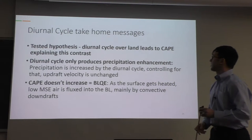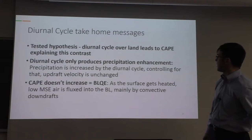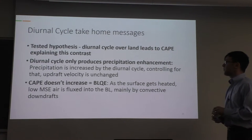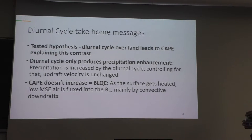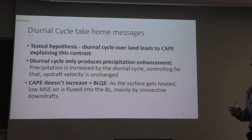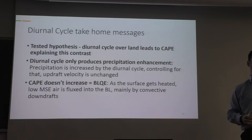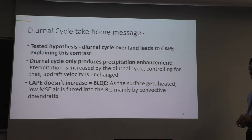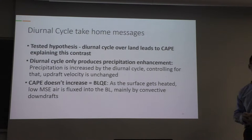Diurnal cycle take-home messages: our tested hypothesis is that the diurnal cycle over land leads to CAPE explaining the land-ocean contrast in convective intensity. We find that the diurnal cycle only produces precipitation enhancement — the amount of rainfall over our island increases with the diurnal cycle — but actual convective intensities are unchanged when you control for the amount of precipitation. We also find that CAPE does not actually increase, due to boundary layer quasi-equilibrium: as the surface gets heated, low moist-static-energy air is fluxed into the boundary layer, mainly contributed by convective downdrafts.